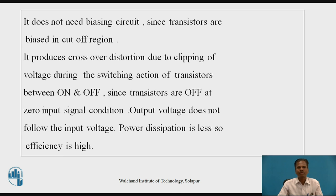Since transistors are OFF at zero input signal condition, some part of the input AC voltage signal is consumed in turning ON the transistors. So the output voltage — collector voltage — and collector current of a transistor does not follow the input base voltage and base current, causing distortion. Since only one transistor is conducting in each half cycle, power dissipation is very less, so power wastage is very less.